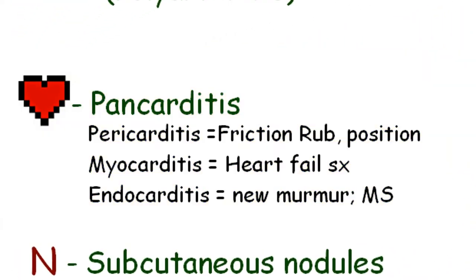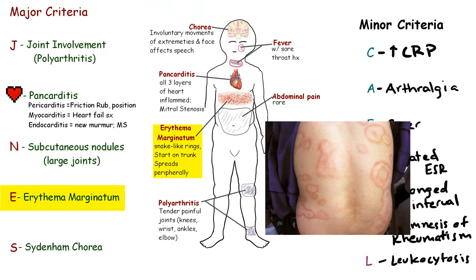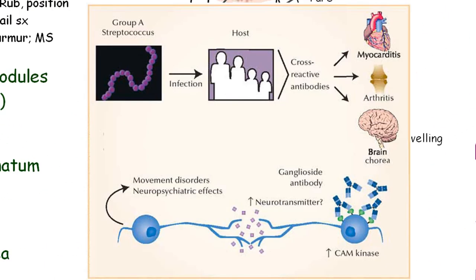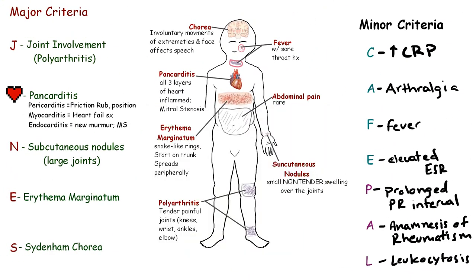If it's myocarditis, they'll have symptoms of heart failure. If it's endocarditis, they may have a new murmur. Other major criteria include subcutaneous nodules, erythema marginatum (a snake-like ring rash starting on the arms and trunk), and Sydenham chorea - a weird dance-like movement or fasciculations that happen only when they're awake. This is from antibodies attacking the corpus striatum of the basal ganglia due to molecular mimicry.